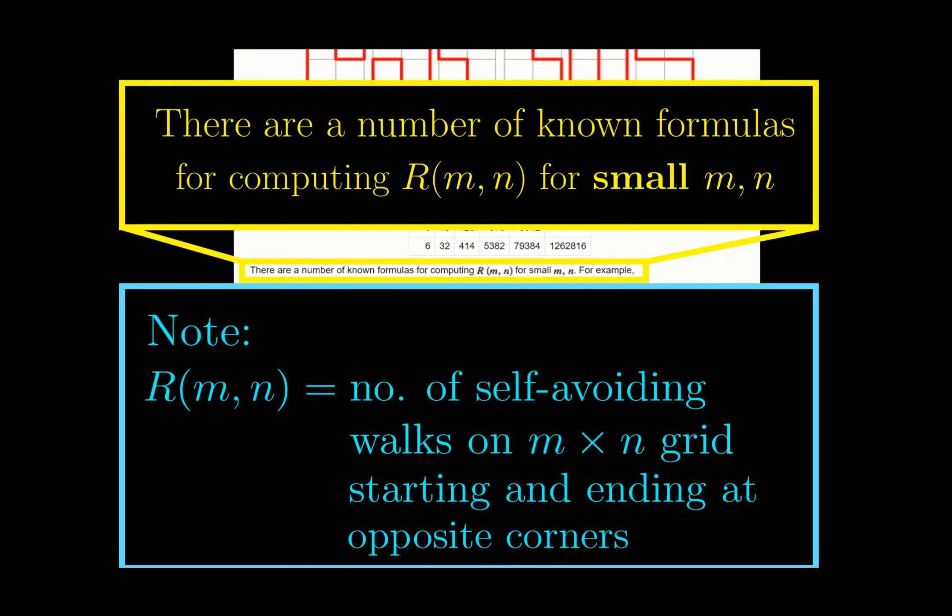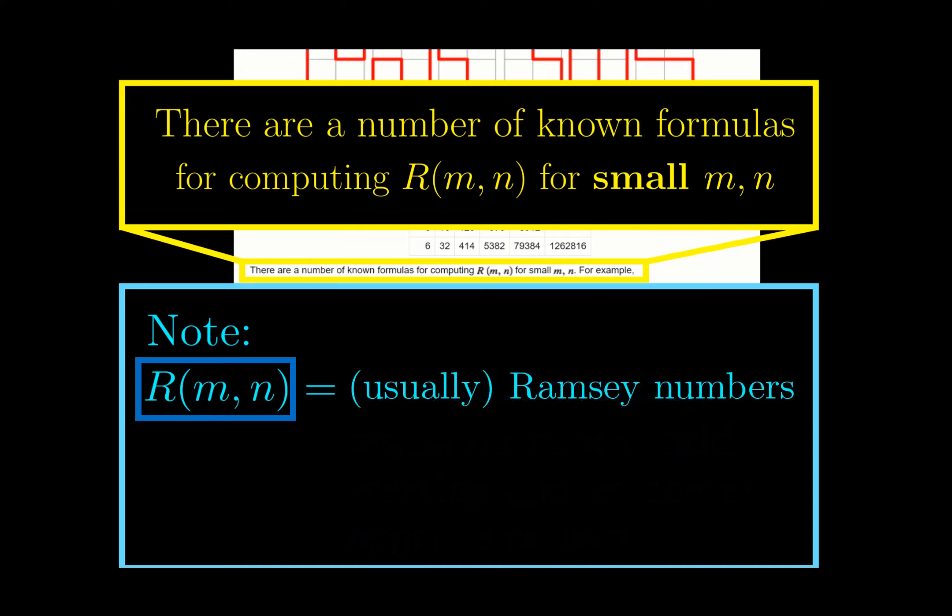In the previous video, I explained the notation R(m,n) to be the number of self-avoiding walks. Turns out that this is not the most famous use of this notation. It is much more commonly used to denote Ramsey numbers, which we will explore in this video.